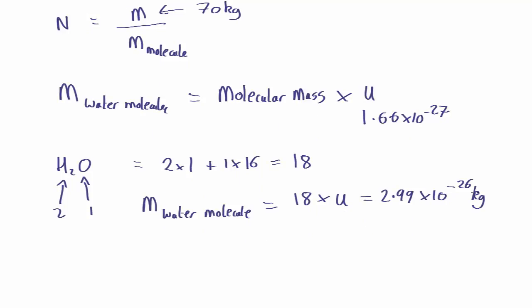So then if my body was entirely made of water how many molecules? There's going to be 70 kilograms divided by 2.99 by 10 to the minus 26 which comes out as 2.34 by 10 to the 27 molecules.